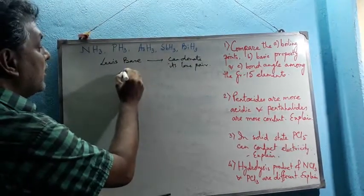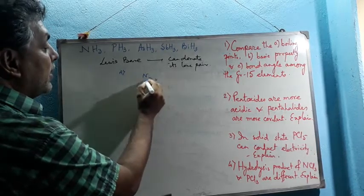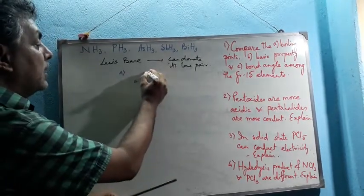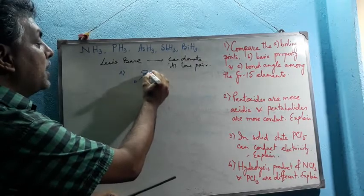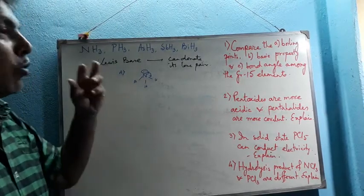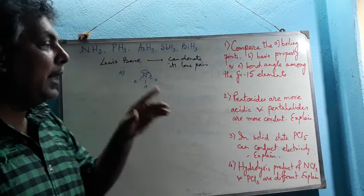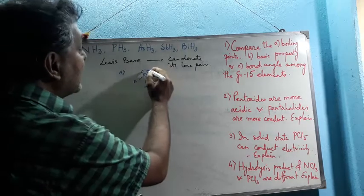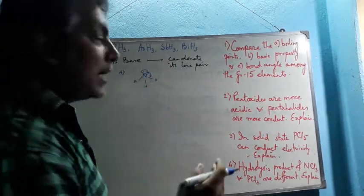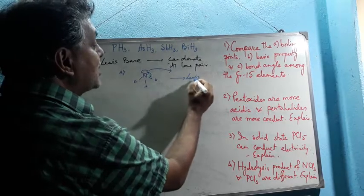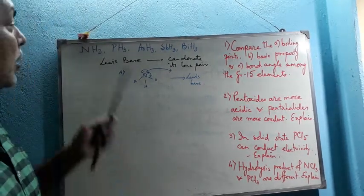Explanation one: due to the small size of nitrogen, the topmost element of Group 15, lone pair–bond pair repulsion becomes very high. Nitrogen is highly electronegative, and due to its small size, the lone pair is located close to the nucleus. This high repulsion makes the system less stable, so nitrogen has a tendency to donate its lone pair to another substance, making it a good Lewis base.